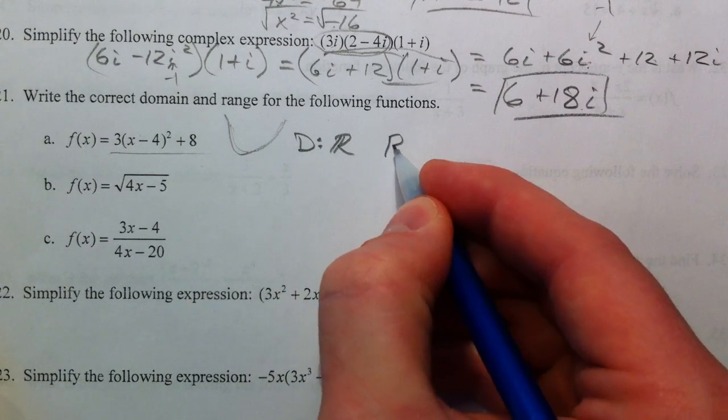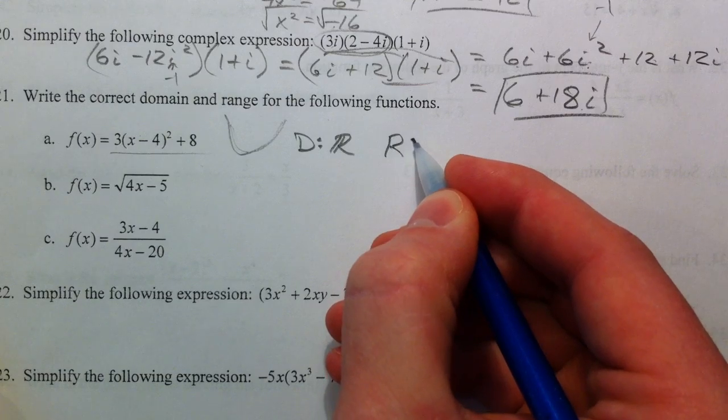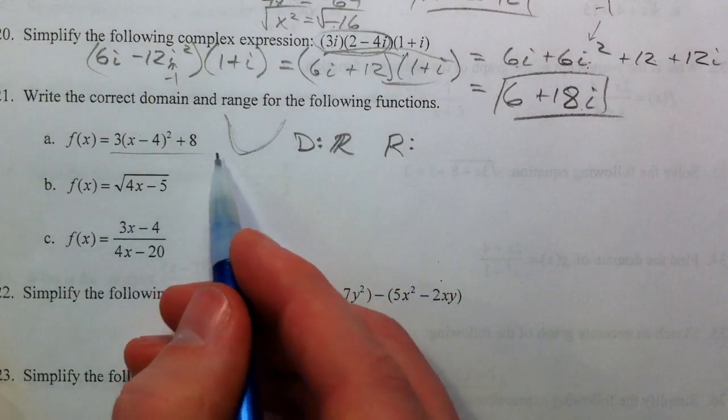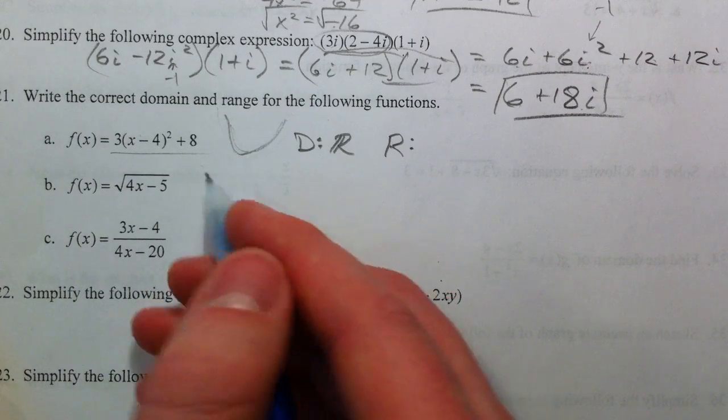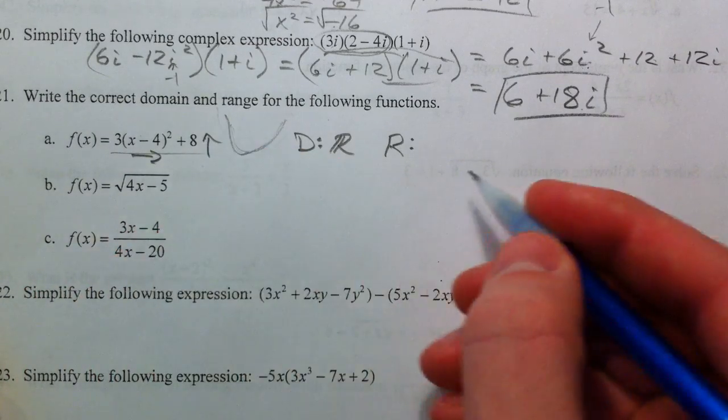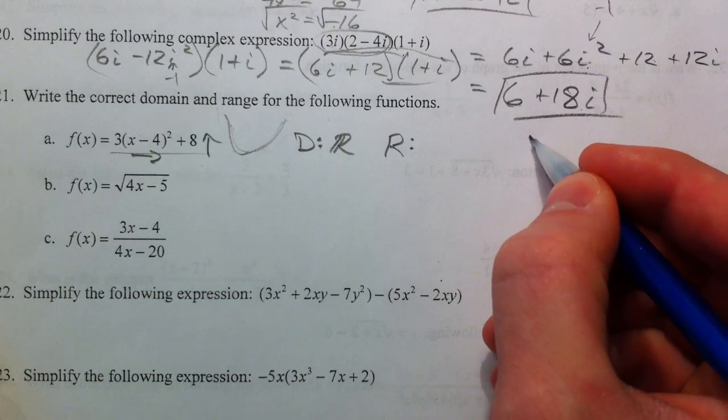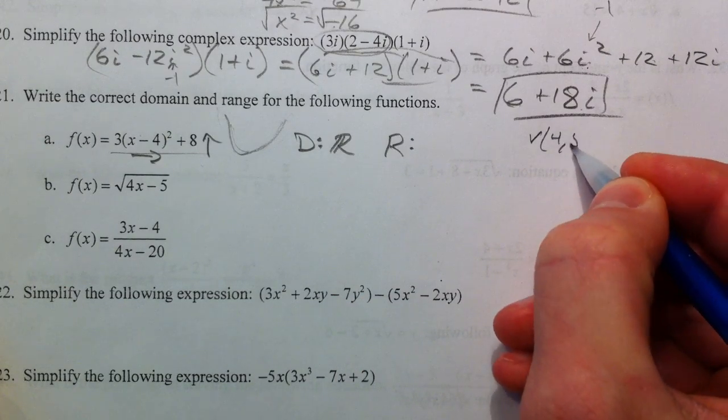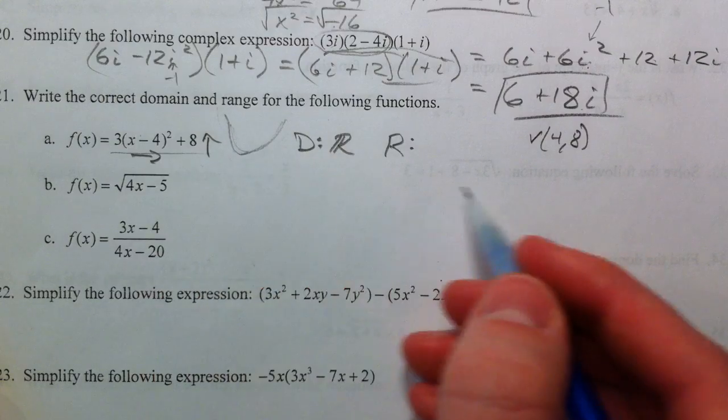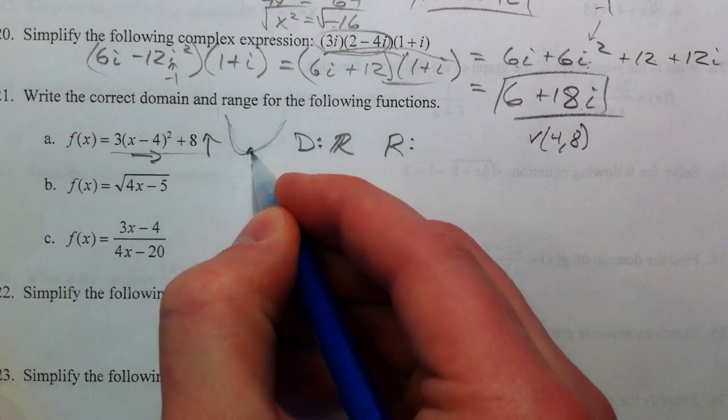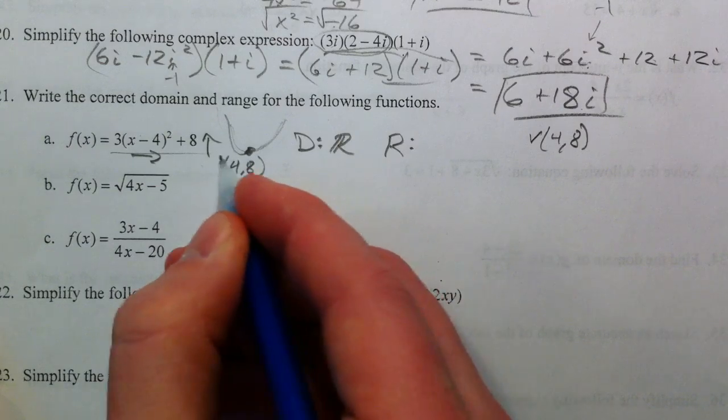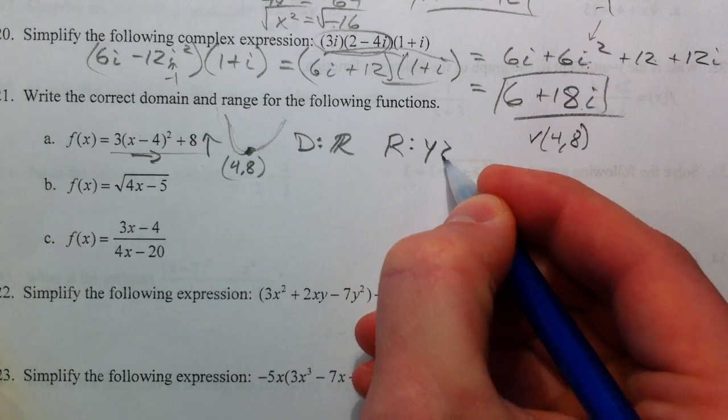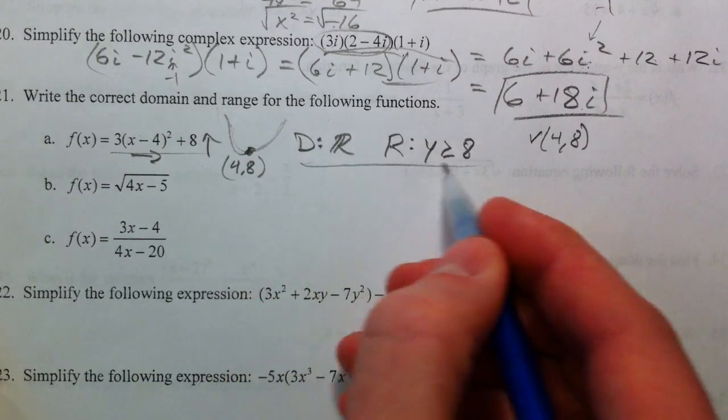And the range has to do with what y values come out, and so the y values for this parabola are going to start at a point. And so because we went 4 to the right and up 8, the vertex is 4,8. And so the lowest it's going to get, because this you could mark as 4,8, lowest it's going to get is 8. And so our y values are greater than or equal to 8.